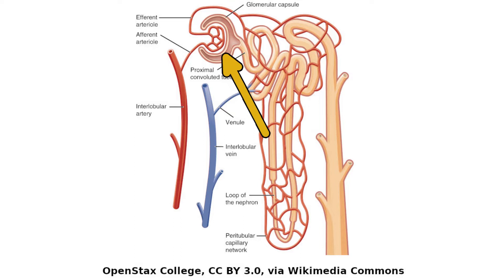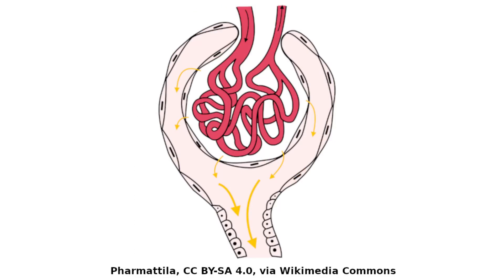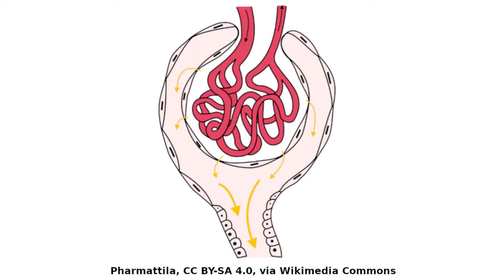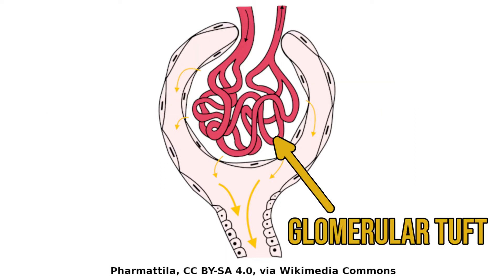It's where the blood is filtered, with small molecules passing into the Bowman's space. There are two major blood vessels, one entering and one leaving the glomerulus — these are the afferent and efferent arterioles respectively. They feed into a tight mesh of capillaries called the glomerular tuft.